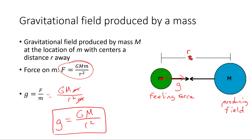The gravitational field produced by a mass big M at some distance r away is given by g equals G·M over r². It's still an inverse square law, just like Newton's law of universal gravitation.